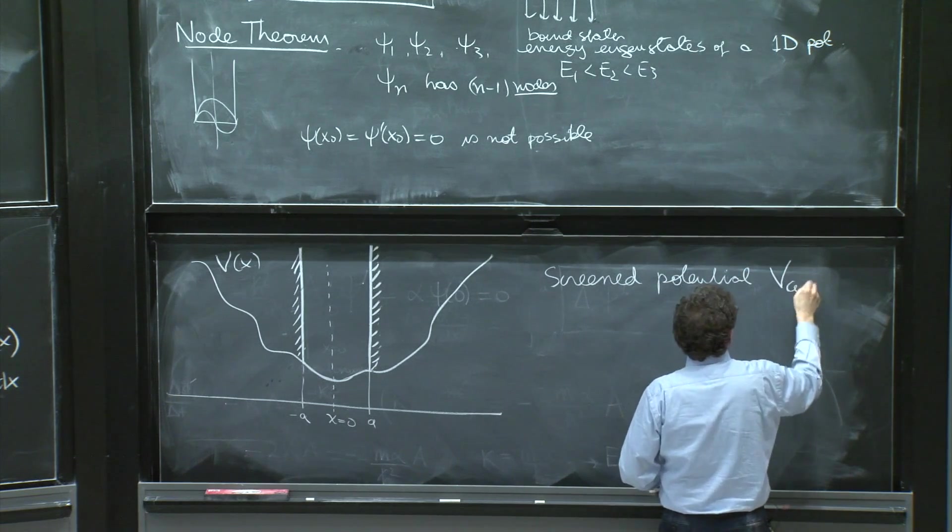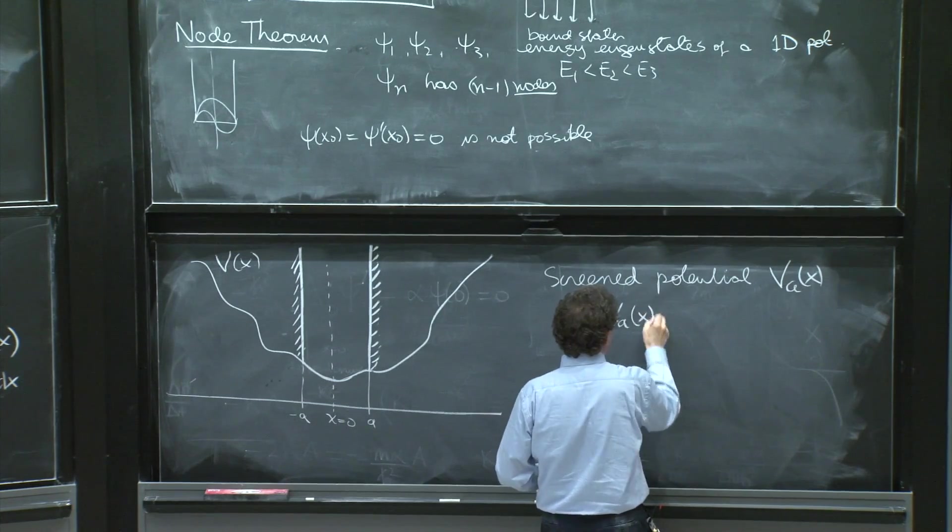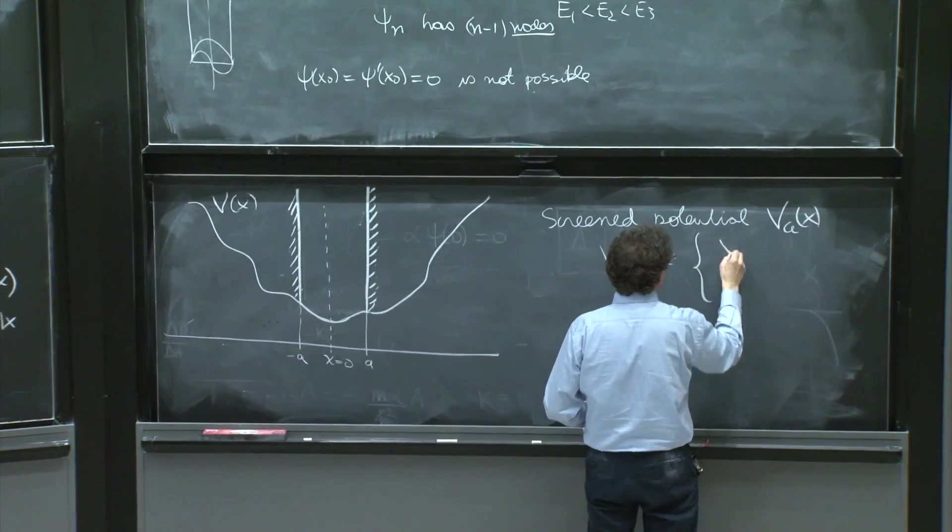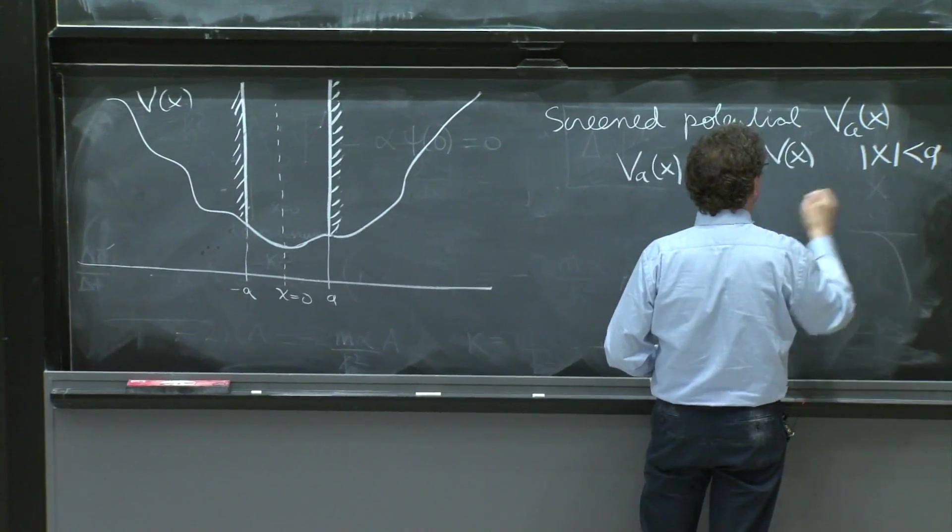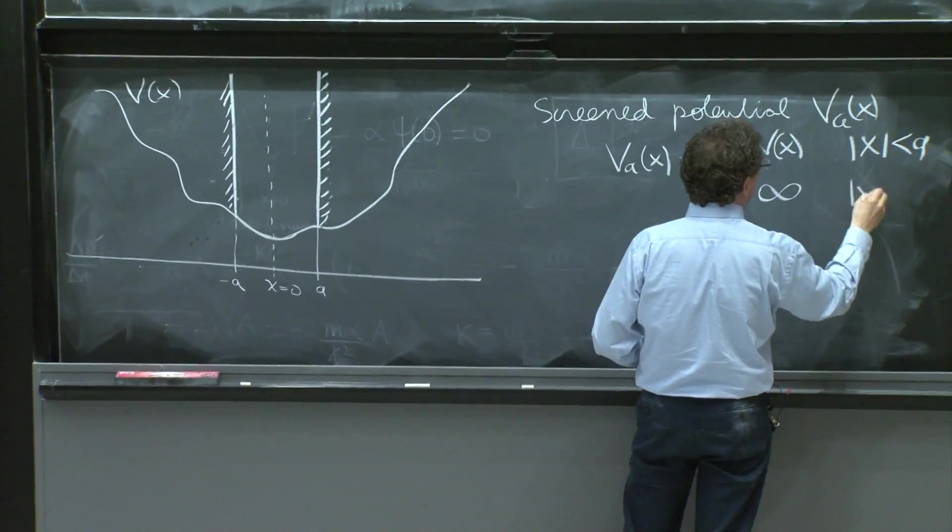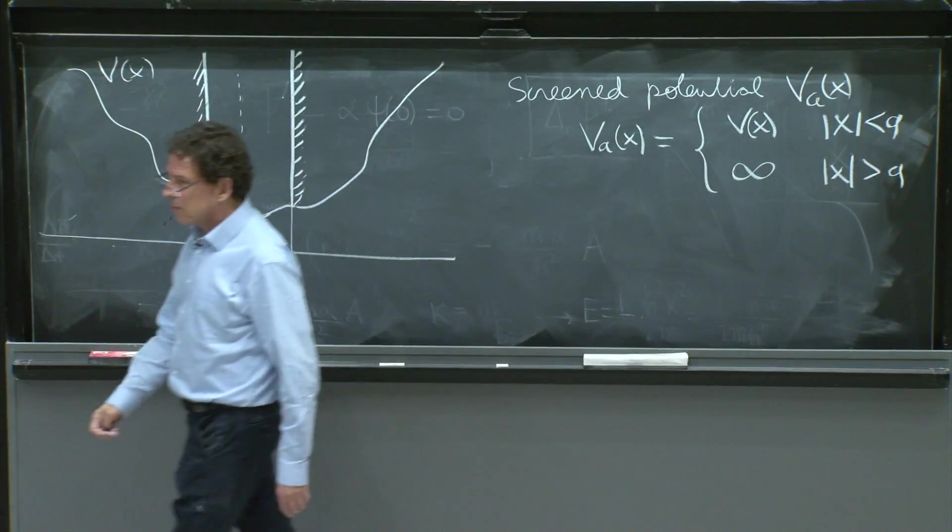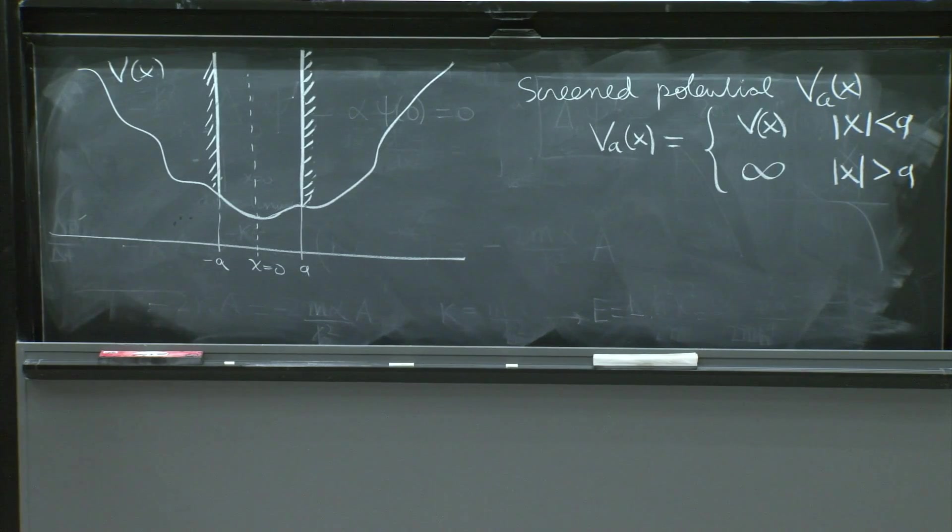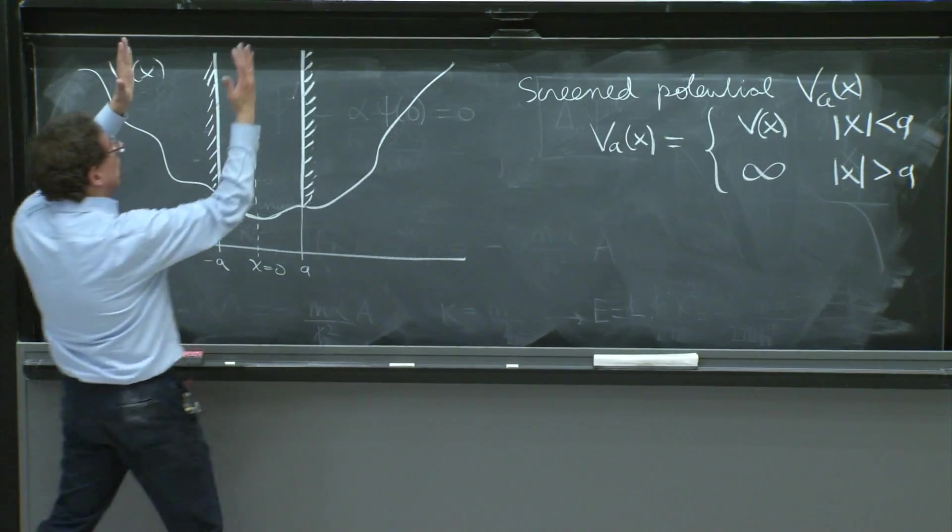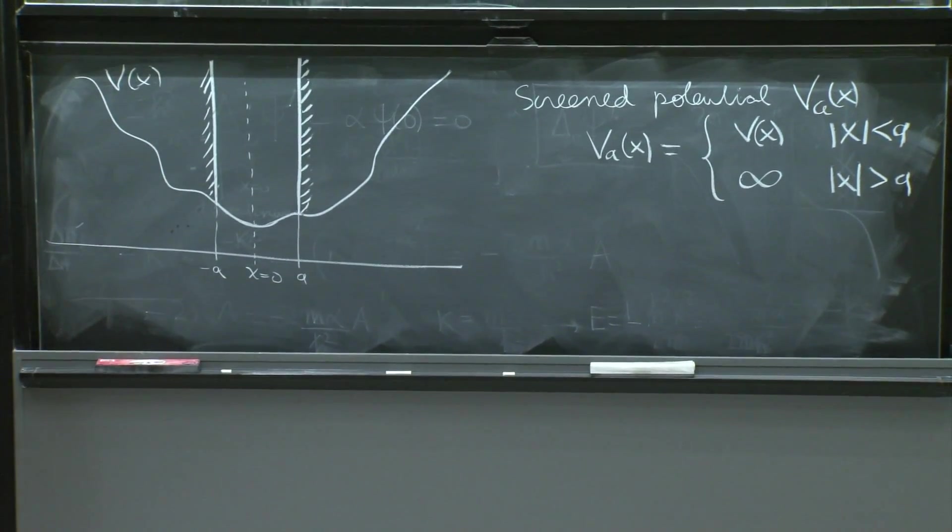Screened potential, Vₐ of x, in which Vₐ of x is equal to V of x for x less than a and it's infinity for x greater than a. So that's a potential in which you sort of turn your potential into an infinite square well whose bottom follows the potential. It's not flat.